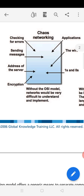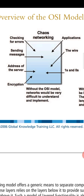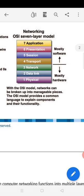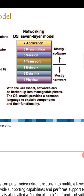The OSI model has seven layers: physical layer, data link layer, network layer, transport layer, session layer, presentation layer, and application layer. The first three — physical, data link, and network — are hardware related. Transport, session, presentation, and application are mostly software related.